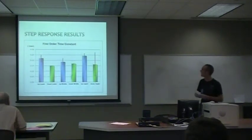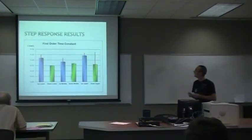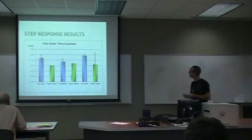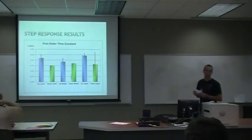For the first order time constant, they vary greatly between the lower and the upper regions, going anywhere from 0.15 to 0.23.